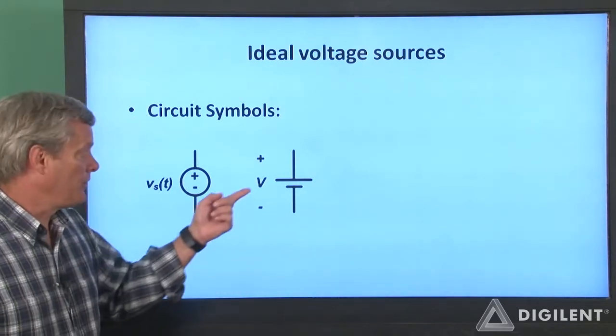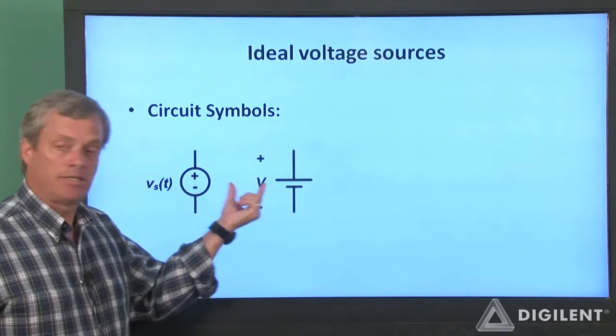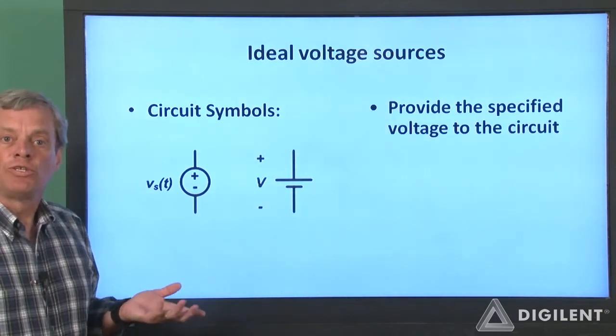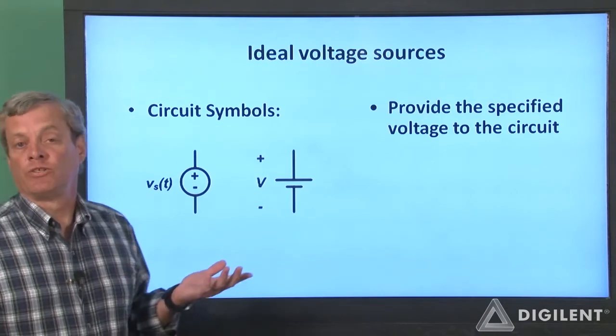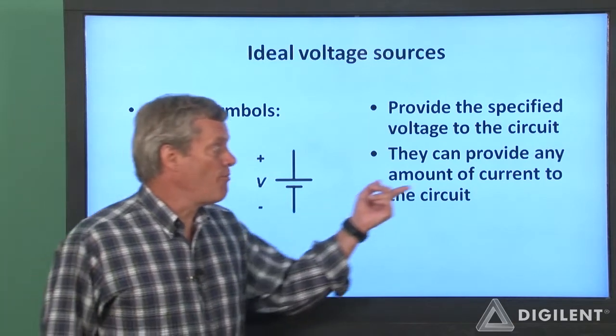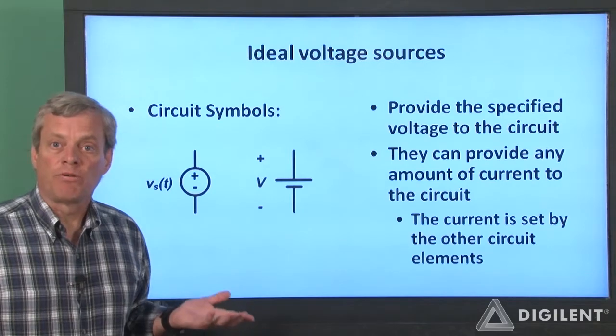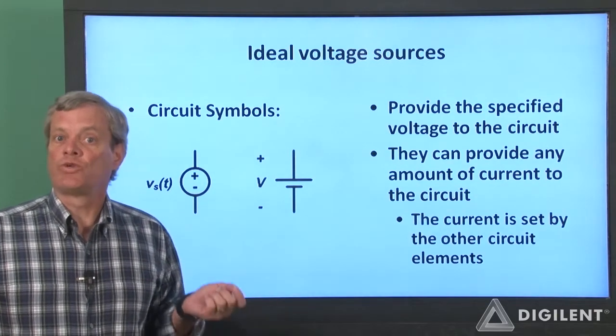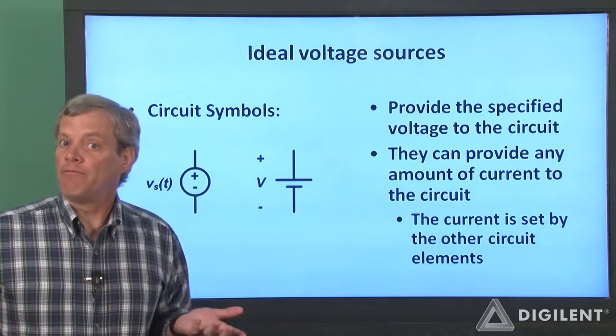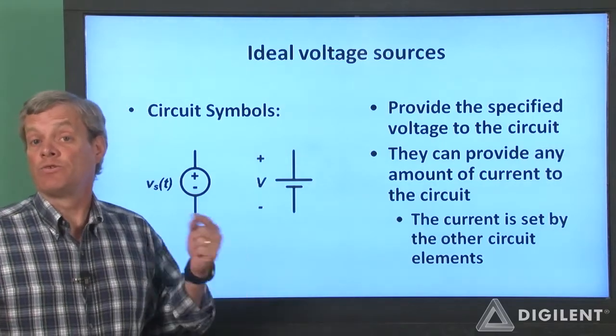In both cases, the polarity of the source is indicated on the sketch and the value of the voltage, either a constant or a function of time, is indicated next to the symbol. Ideal voltage sources provide the specified voltage regardless of anything else. For an ideal source, this is true no matter how much current is being provided by the source. The amount of current provided by an ideal voltage source is completely determined by the circuit the source is connected to. A side effect of this is that it's theoretically possible for an ideal source to provide infinite power, as we'll see later.